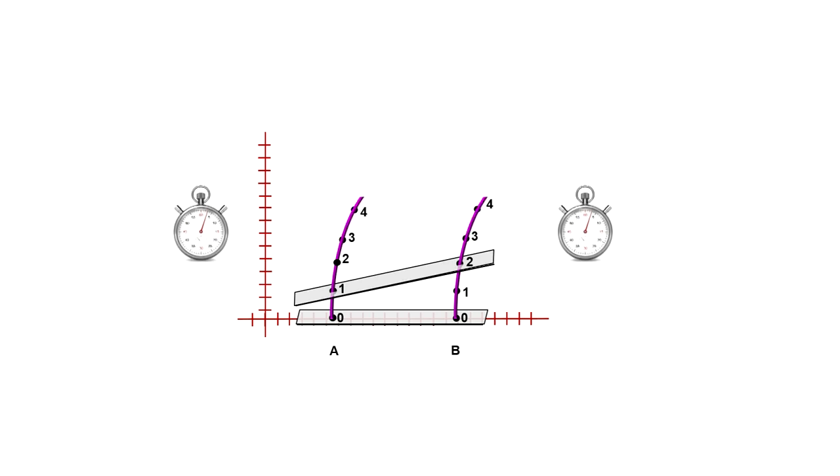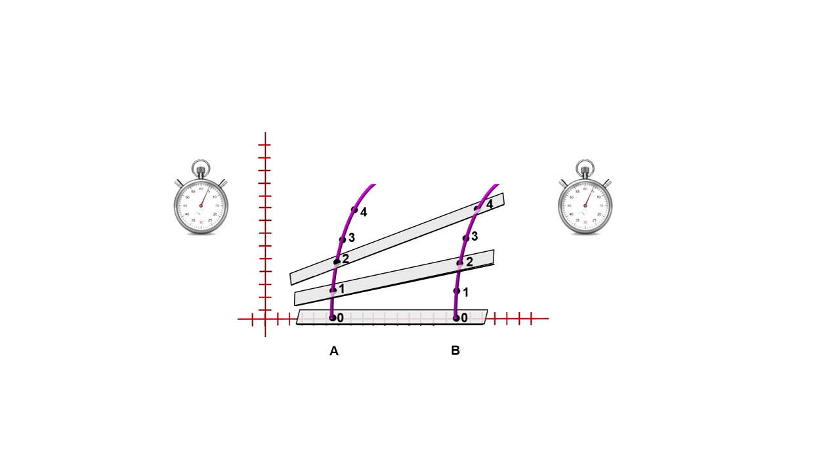Continuing to a higher velocity, with the steeper slope for the simultaneity plane, B sees A's clock reading two when his own clock reads four. A also sees his own clock reading two when B's clock reads four.